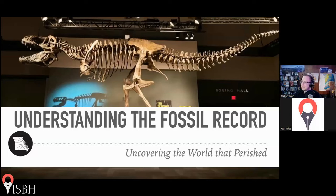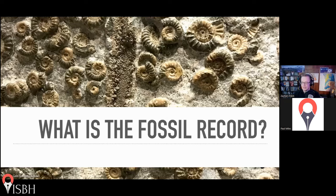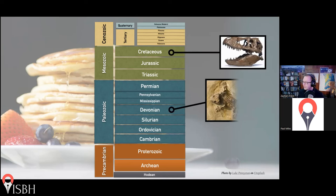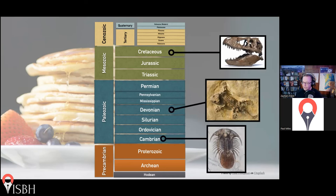Thank you, Paul. So, what is the fossil record? This talk is really just the second part of my first presentation. I'm going to be building off of this idea that we have a geologic column that represents, in a relatively reliable way, the relative order and age of the Earth's rocks. And within those rocks, we find more than just rocks — we find fossils. We find the remains of animals and plants, various types of organisms, many of which we don't have today, like the dinosaurs and the trilobites.